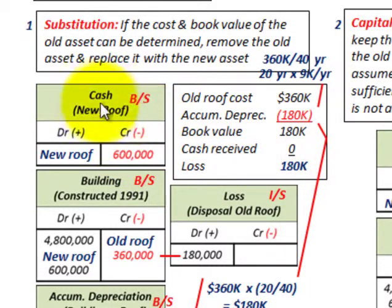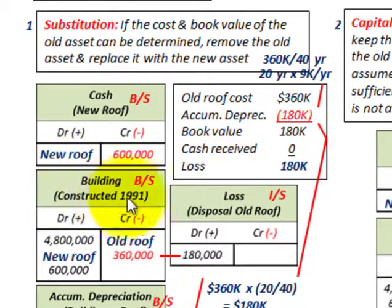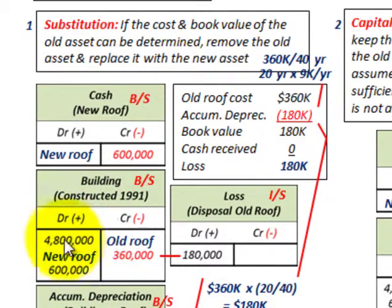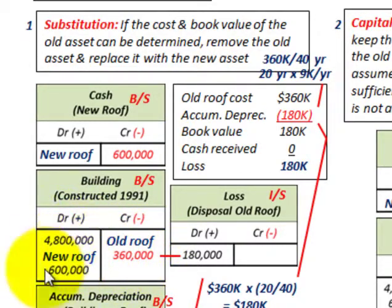Now for our journal entries under the substitution method. We credit our cash account for the cost of the new roof at $600,000. For the building account — the building constructed in 1991 — we remove the old asset and replace it with the new asset. We credit our building account by $360,000 to remove the old roof, and then debit our building account by $600,000 for the value of the new roof.